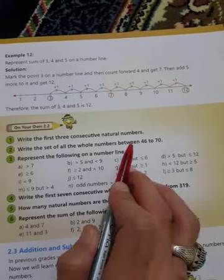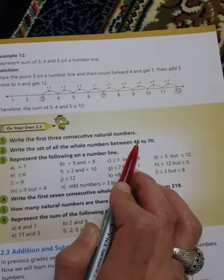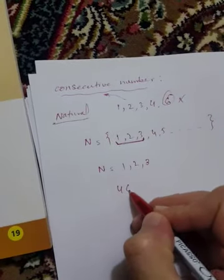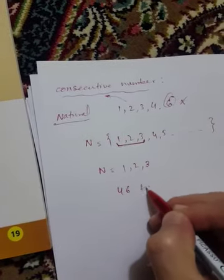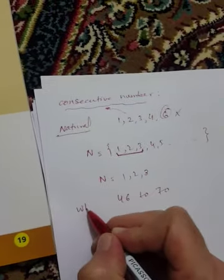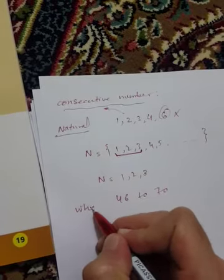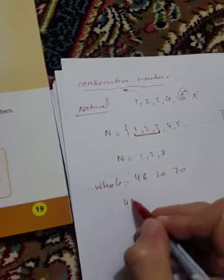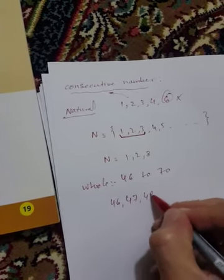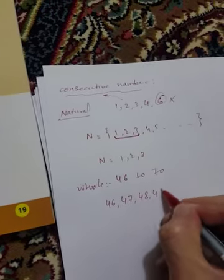Set of whole numbers between 46 to 70. Write all numbers — 46, all numbers from 46.